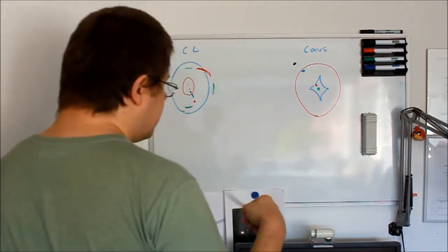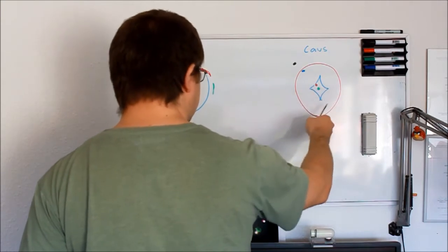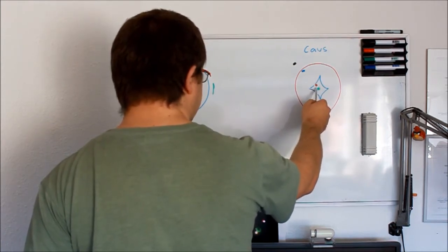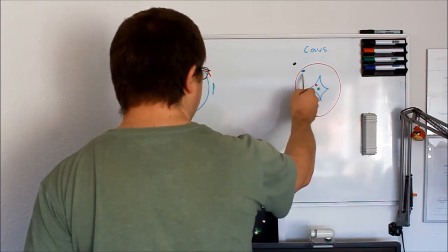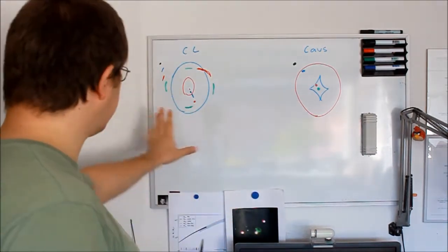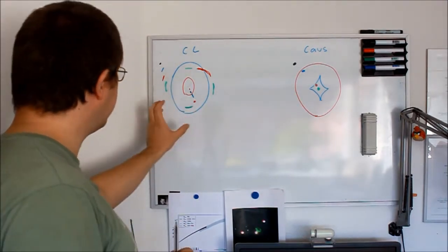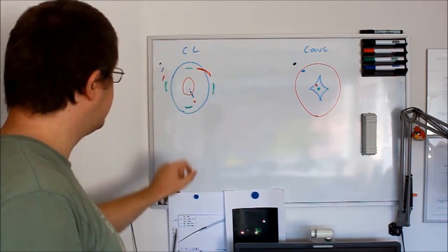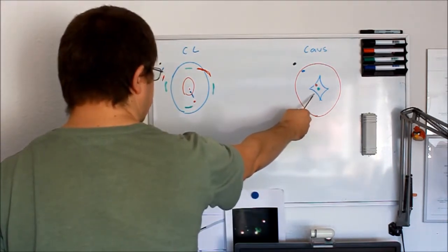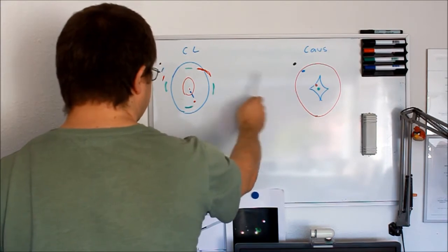With the caustics, the story is somewhat the same, but the caustics relate how many images are formed and how they are formed to the position of the source. We have a central source, a source close to an inner caustic, a source close to an outer caustic, and a source outside both caustics. The position of the source in relation to the caustics gives us the position of the images with relation to the critical lines. The inner caustic is related to the outer critical line, and the outer caustic is related to the inner critical line.